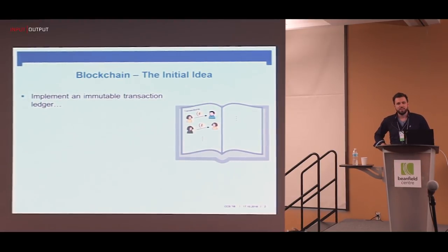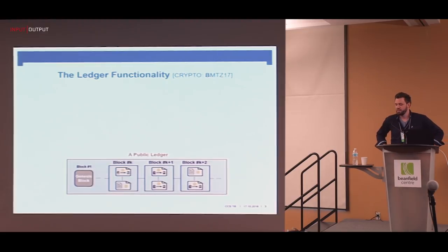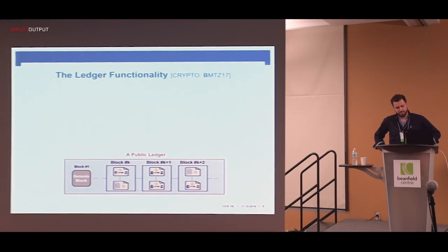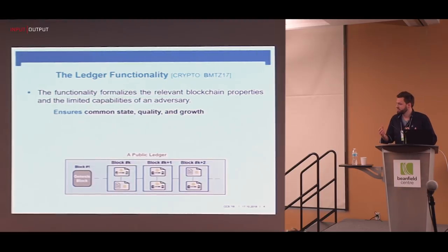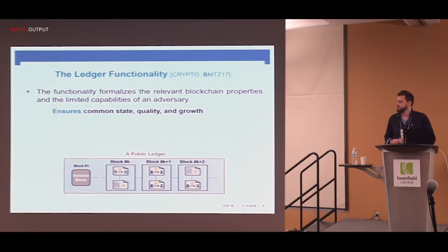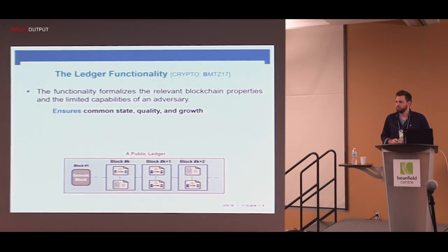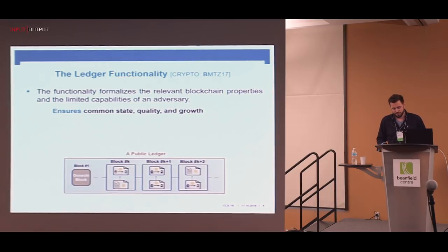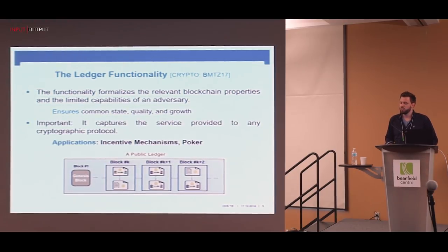We also know how to formulate this more formally in a cryptographic setting, namely as a transaction ledger functionality that we introduced in a crypto paper last year. It exports a certain state that everybody can read, ensures chain growth so the state really extends over time, and also ensures chain quality — basically that there are well-formed blocks containing a lot of recent transactions. It also captures the influence an adversary could potentially have.